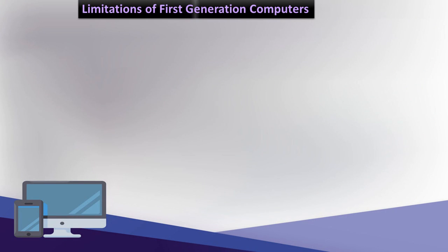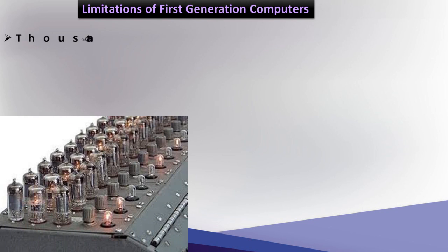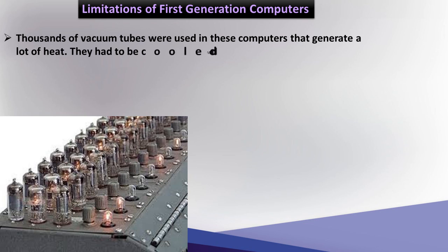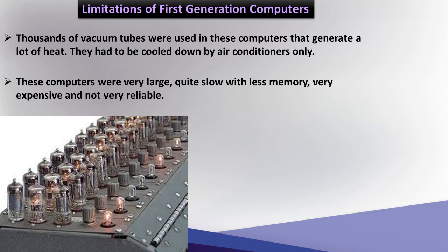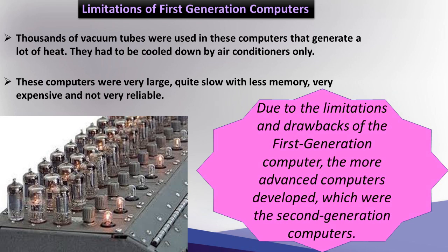Limitations of first generation computers: Thousands of vacuum tubes were used in these computers that generated a lot of heat. They had to be cooled down by air conditioners only. These computers were very large, quite slow with less memory, very expensive and not very reliable. Due to the limitations and drawbacks of the first generation computer, more advanced computers were developed, which were the second generation computers.